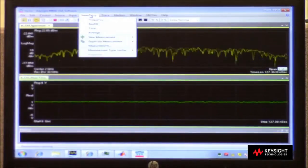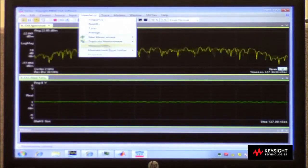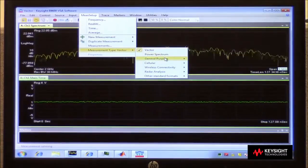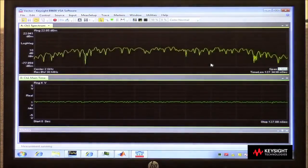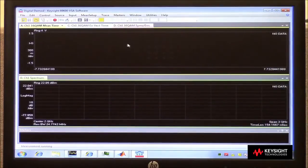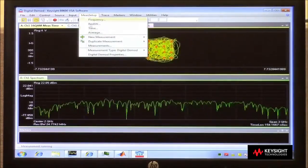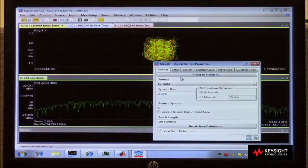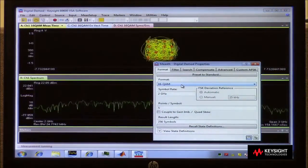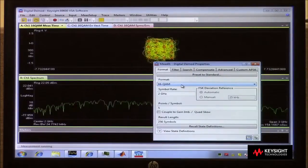Then in the measurement setup menu, I can go down to measurement type and choose, under general purpose, digital demodulation. And more specifically, under the digital demodulation properties, I have set up 16 QAM. That's the type of signal that I have here.